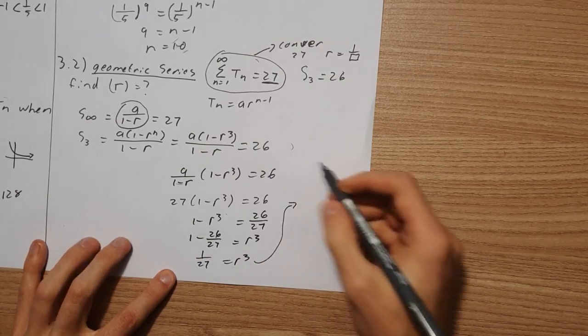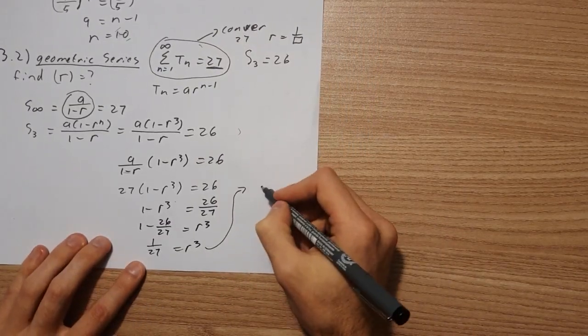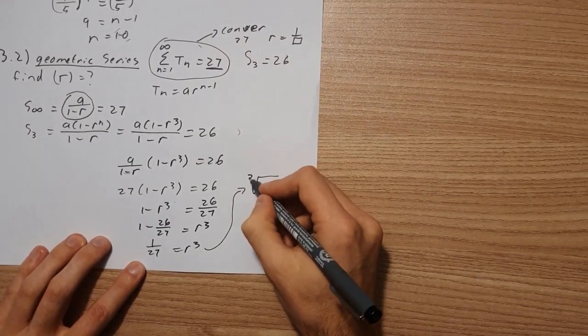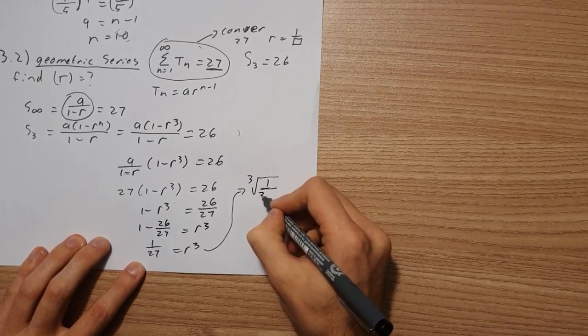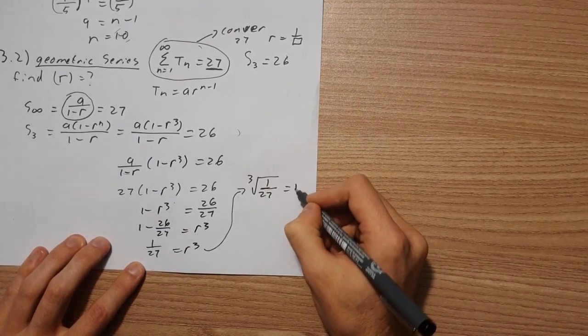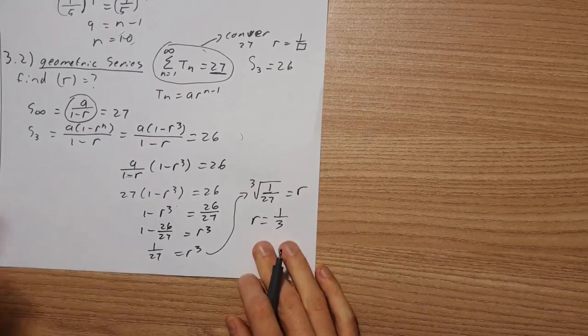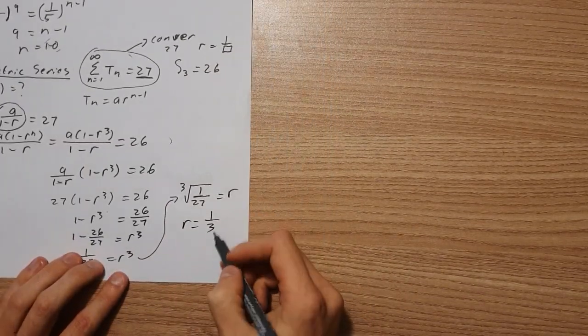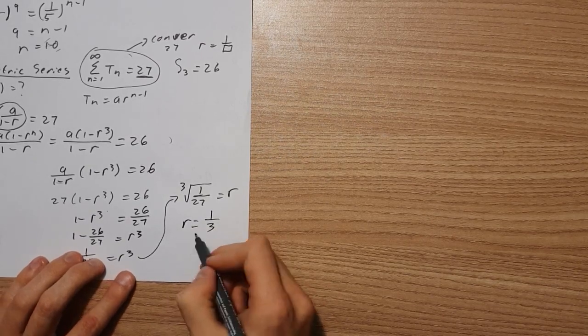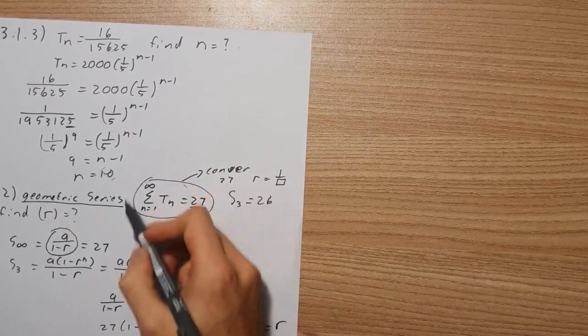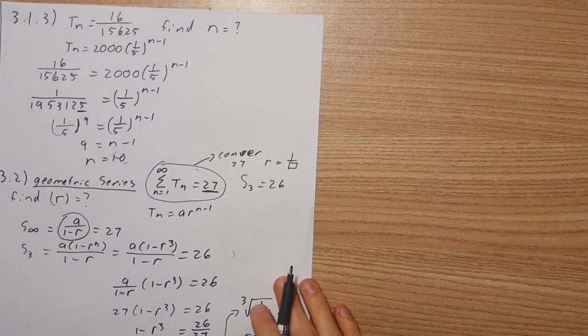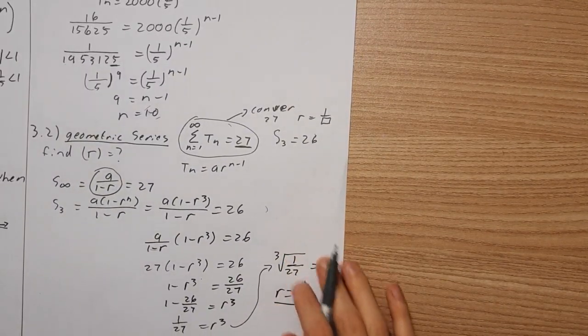So what happens is we'll have the cubed root of 1 over 27 equals r. Therefore r equals 1 over 3. 1 over 3 is less than 1 and greater than negative 1, so we can definitely see that it converges and this makes sense. And that's how we score 4 marks in this question.